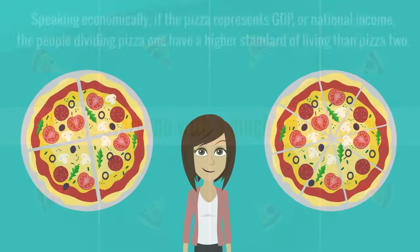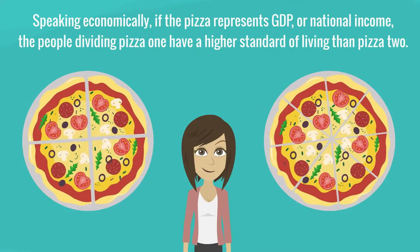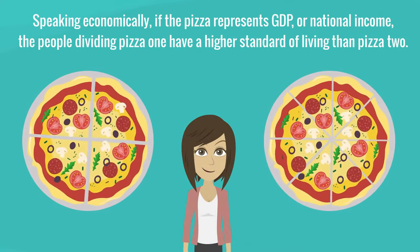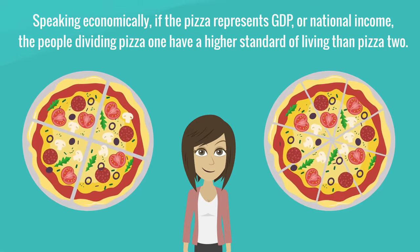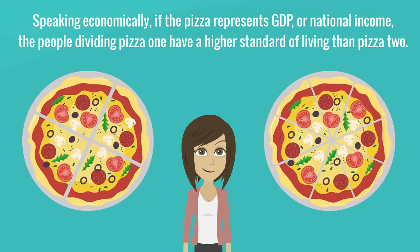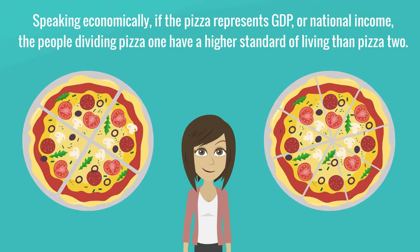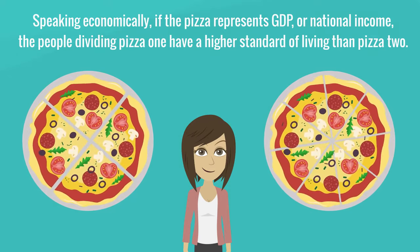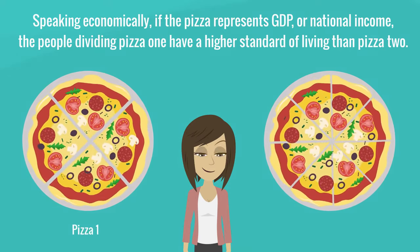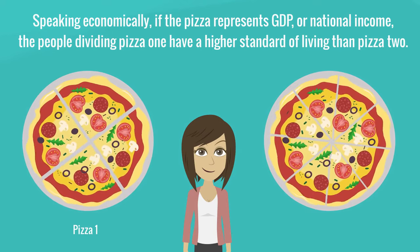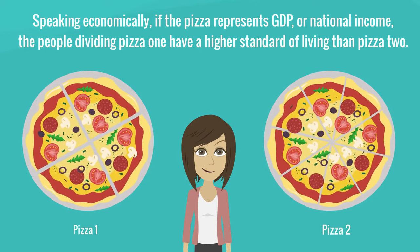Speaking economically, if the pizza represents GDP, or national income, the people dividing Pizza 1 have a higher standard of living than Pizza 2.